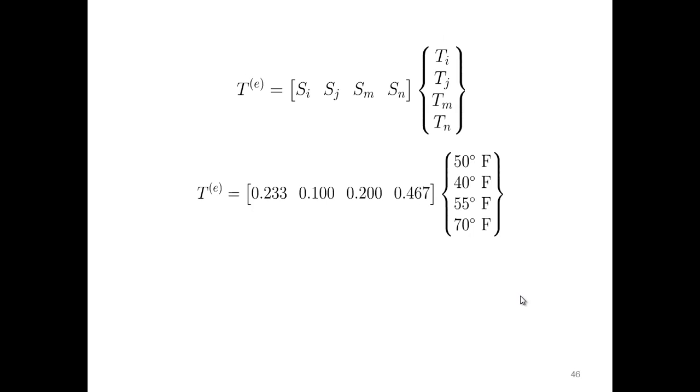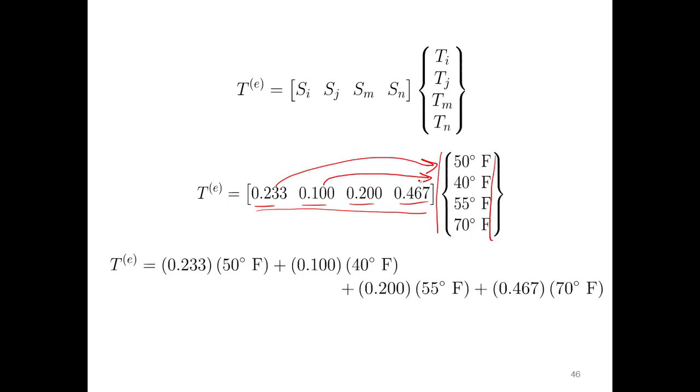We're going to plug those back in and solve for our temperatures. There's the shape value for the shape function we just solved for in the previous slide. Here are all the temperatures that we know from the nodes from the initial problem statement. If we just do the matrix math, we take this row and multiply it by this column. So 0.233 times 50 plus 0.1 times 40, et cetera. Add them up, and we get 59.3 degrees Fahrenheit for the temperature at that particular location within our element. Hopefully that's pretty straightforward. It's stuff we did with the one-dimensional case, just moved on to the second dimension.